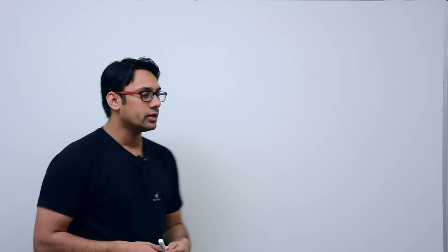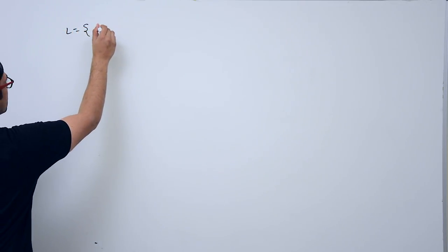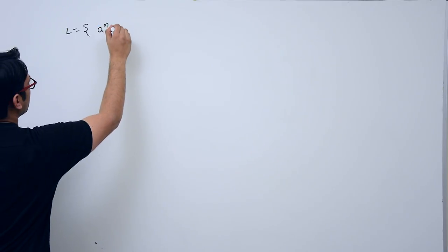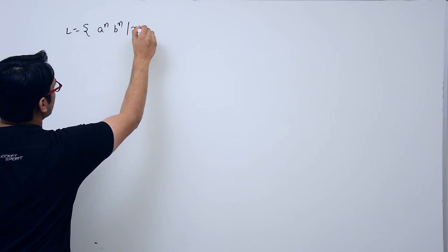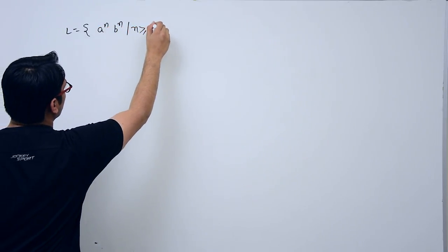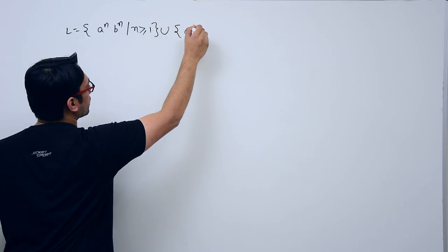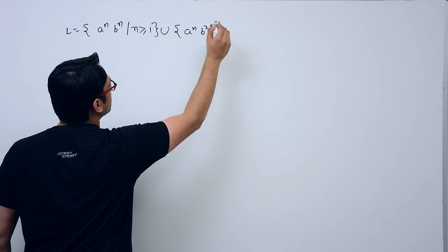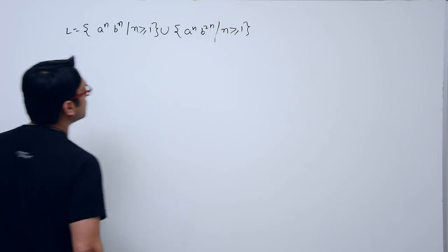Now let us take a few more examples of non-deterministic pushdown automata. Assume the language is a^n b^n where n ≥ 1, union a^n b^2n where n ≥ 1. This is the first language.